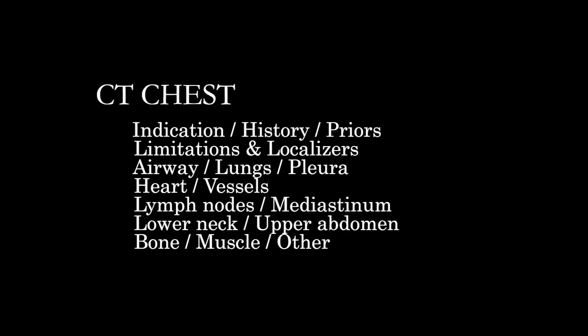That basically covers the anatomy of the chest and the search patterns we can use to cover all of it in a systematic way. Just to give a brief overview: when approaching this study, we get a sense of the overall clinical context and what we're looking for, look at prior studies, and note any limitations such as motion or streak artifact. Then we recap: taking a look at the airways, pleura, and lungs; the cardiovascular system; lymph node stations; other mediastinal structures; the lower neck; upper abdomen; and all the surrounding structures including bones, soft tissues, and muscular structures. That basically covers everything we need to look at categorically for the chest.